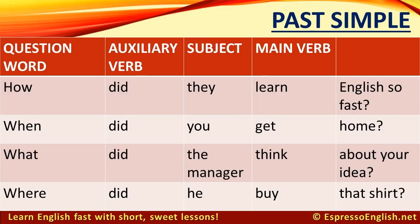The formula also works in the past simple, where the auxiliary verb is 'did.' For example: How did they learn English so fast? When did you get home? What did the manager think about your idea? Where did he buy that shirt?